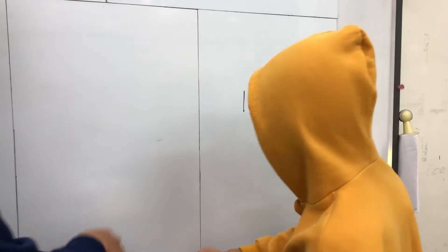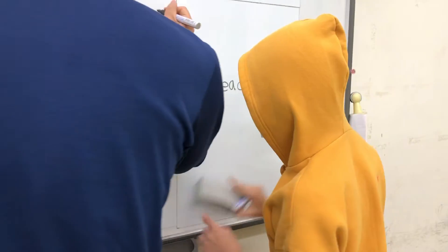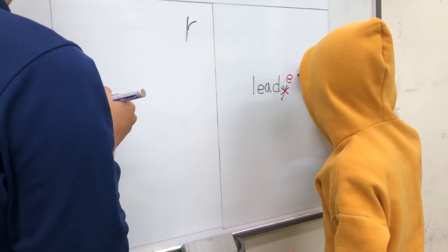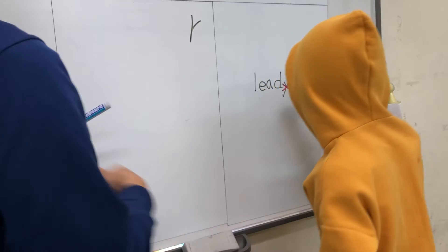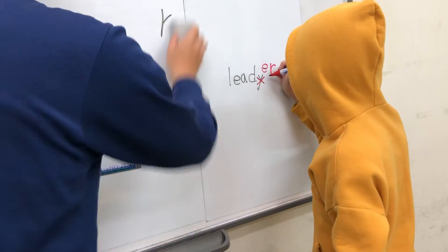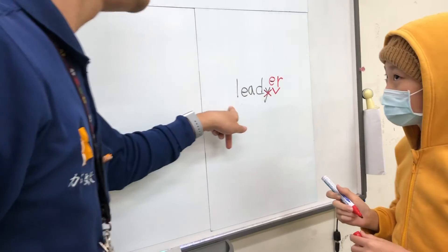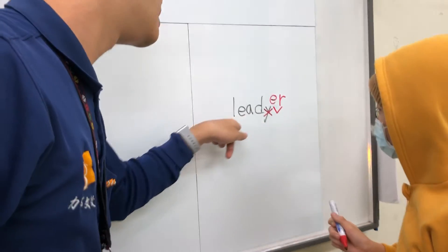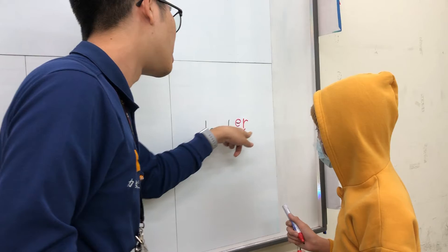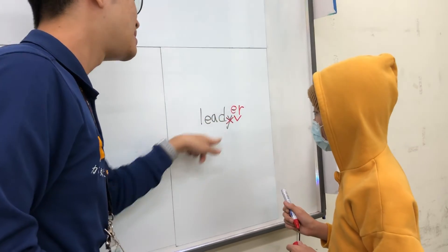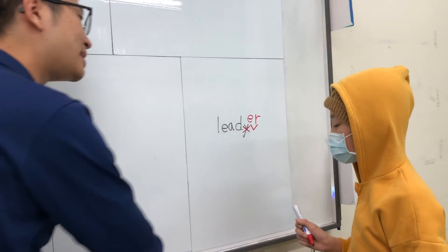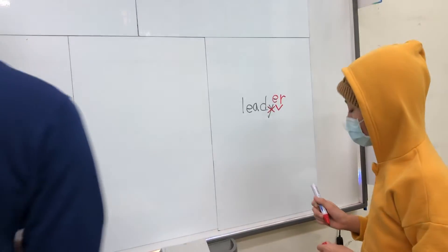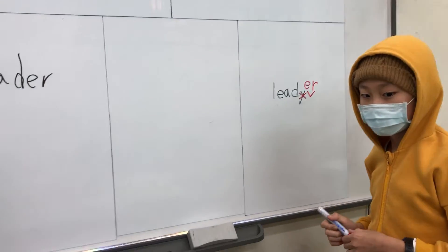你的R寫錯了，你的R有問題。I don't like the R like this，是不對的。他的字是這樣，Li——你的Li正確。不是Y，是ER，Li的這樣子。所以你的下一個步驟是要把這個擦掉。